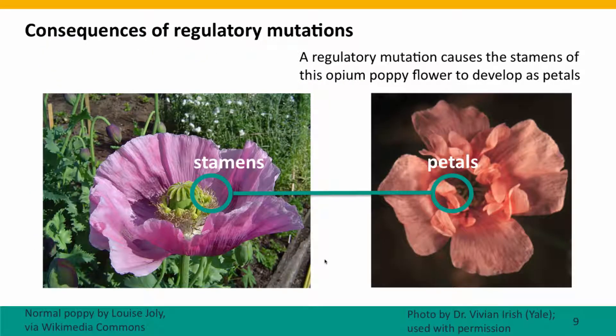Now I want to show you a few more examples of the consequences of regulatory mutations, but this is a different kind of regulatory mutation. These are mutations that cause one kind of tissue to develop into a different kind of tissue. These are developmental mutations that occur when the embryo is developing or when a part of the organism is developing. The examples I'm going to show you are from plants, but similar mutations occur in animals as well.